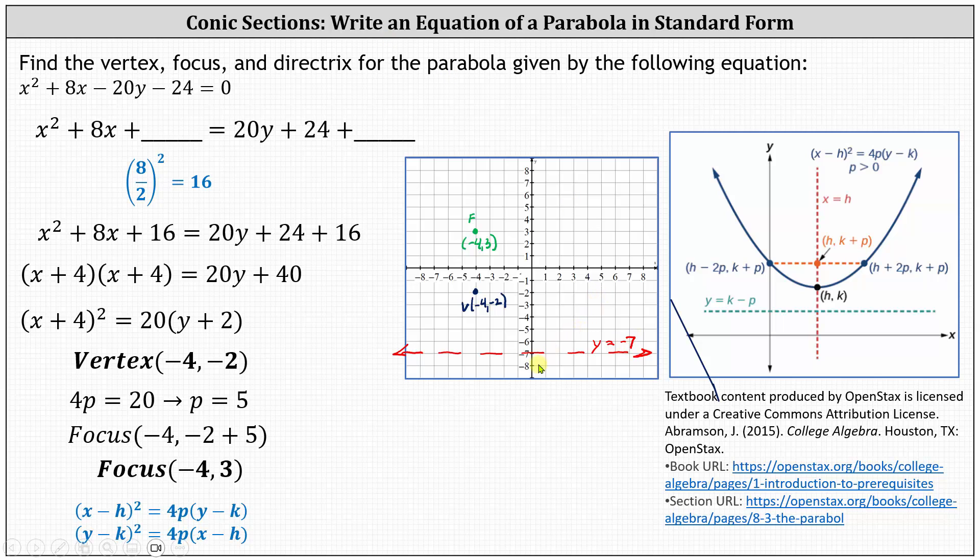More formally to find the equation of the directrix, we would subtract five from the y-coordinate of the vertex, giving us y equals negative two minus five or y equals negative seven.